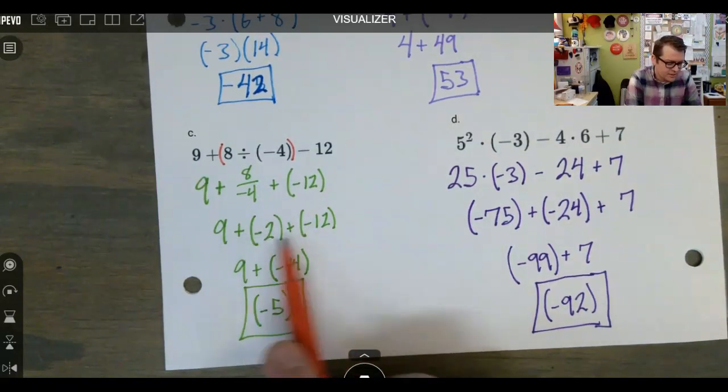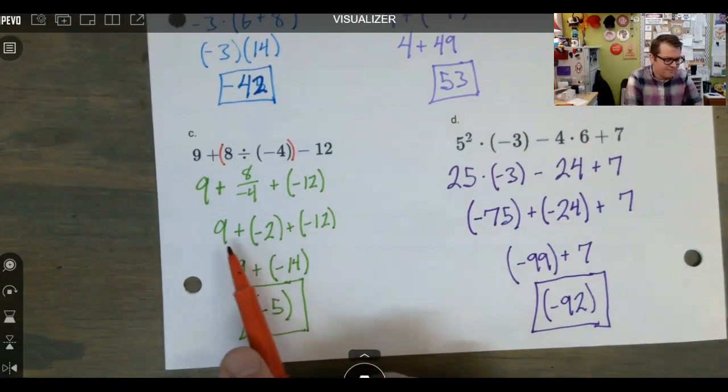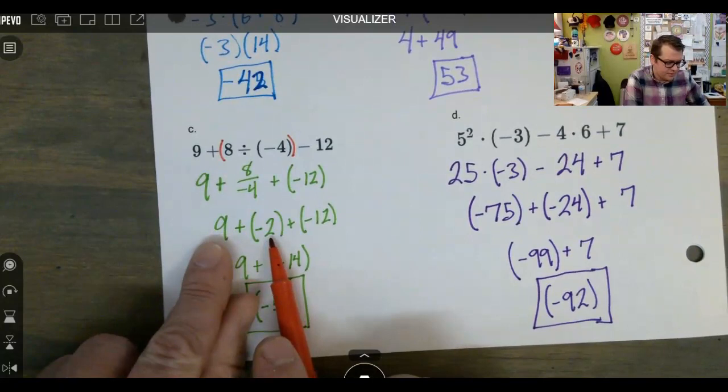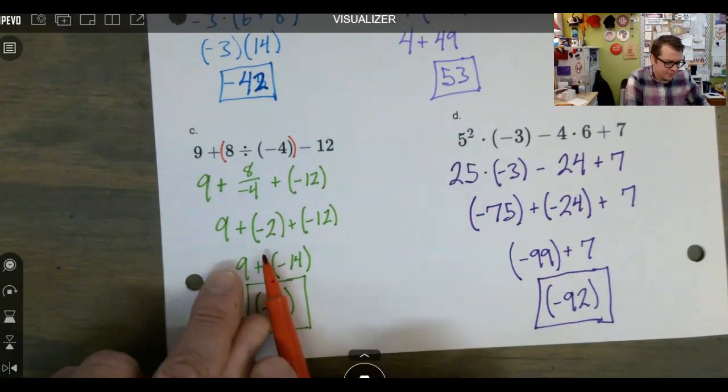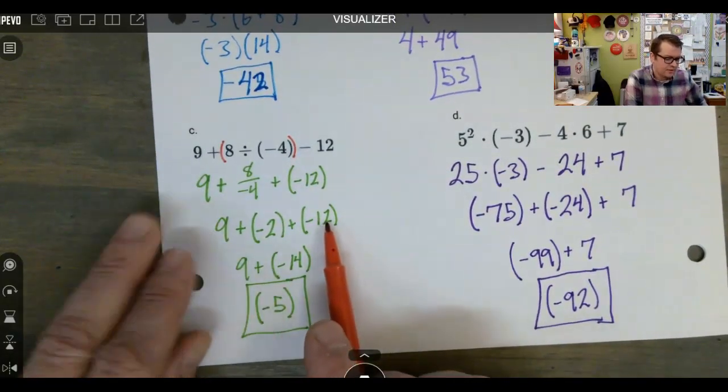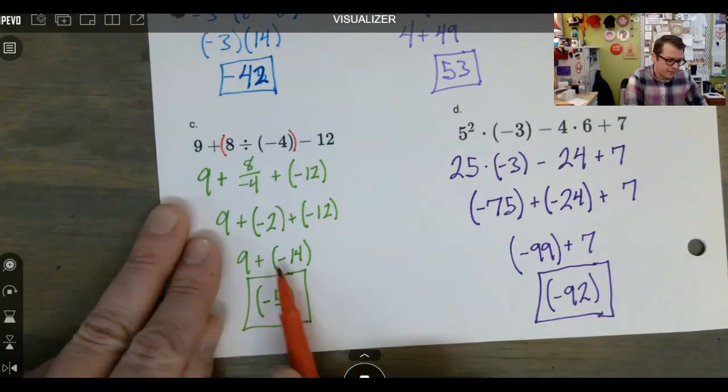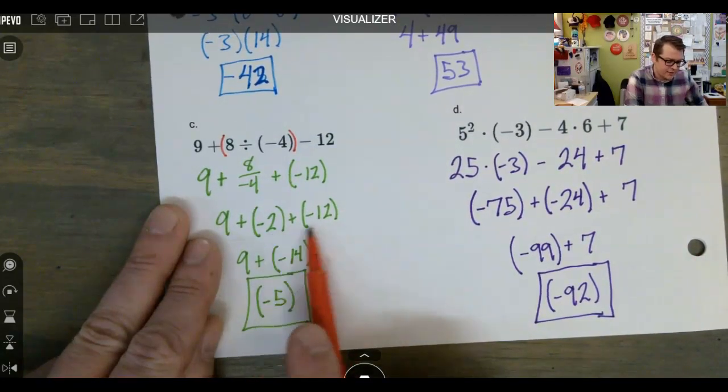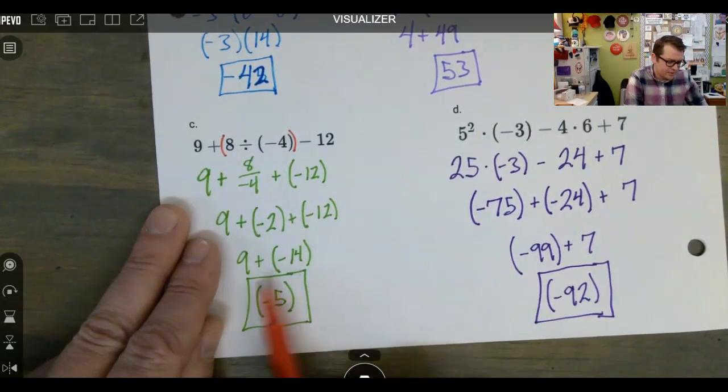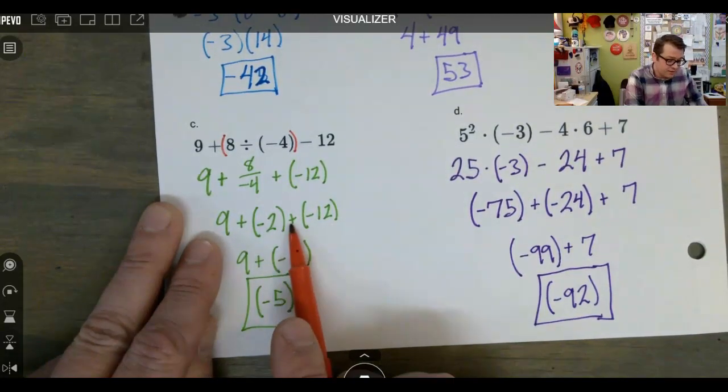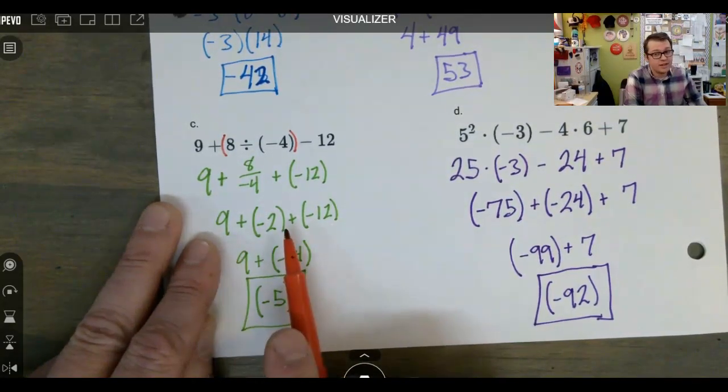However, it'll come out the same since I changed all this to addition. If I did nine plus negative two, this would be seven plus negative 12 would give us negative five. So I teamed up my bad guys first since we made it just addition. I teamed up my bad guys first and did nine plus negative 14. But if you didn't make everything addition, you really got to go left to right.